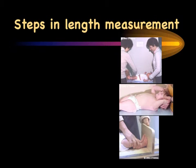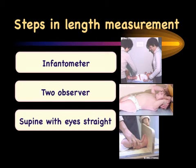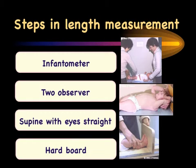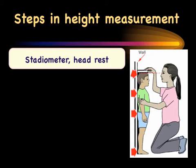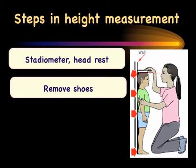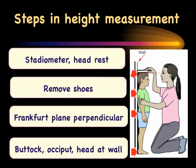For length measurement, the ideal method uses two observers with an infantometer: the child is placed supine with head against the headboard, eyes looking straight, and a hard board pressed against the legs. For height measurement, a stadiometer with a headrest is used; shoes and socks are removed, the Frankfurt plane joining the biauricular canal to the external auditory meatus is kept horizontal, and the buttocks, occiput, and head are rested against the wall.